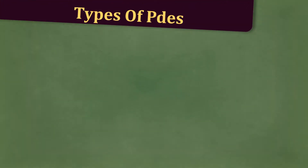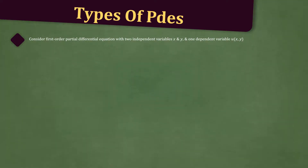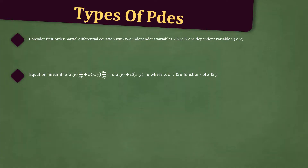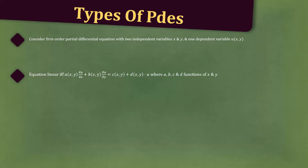First, let's discuss the types of PDEs. Consider a first-order differential equation with two independent variables x and y, and one dependent variable u of x and y. The equation is said to be linear if and only if a(x,y) times the partial derivative of u with respect to x, plus b(x,y) times the partial derivative of u with respect to y, equals c(x,y) plus d(x,y) times u, where a, b, c, and d are functions of x and y.